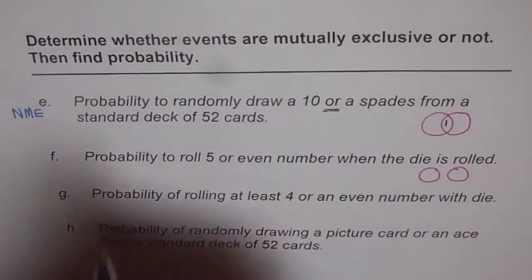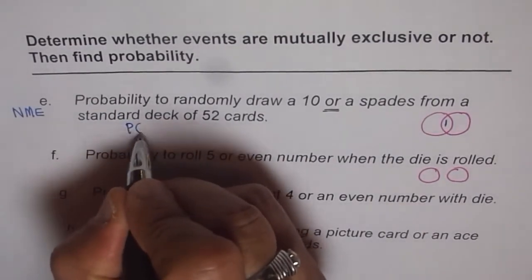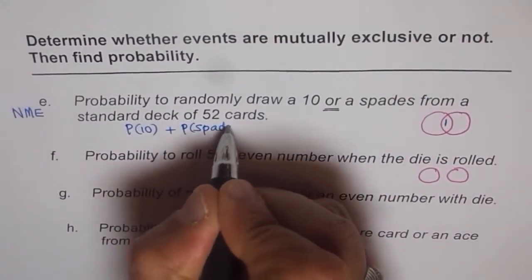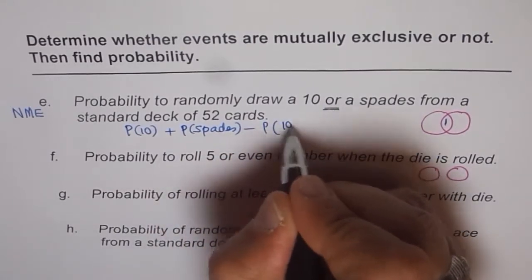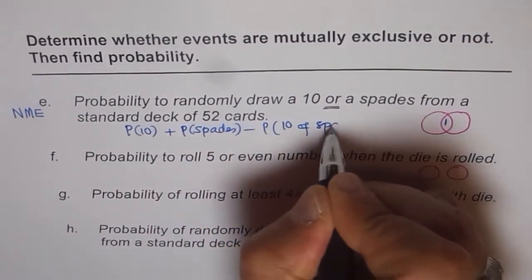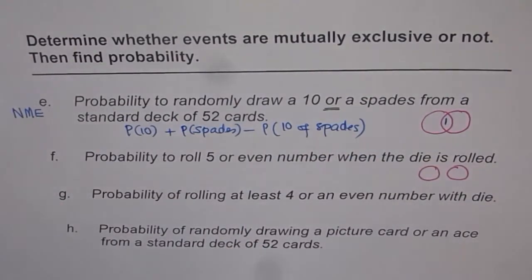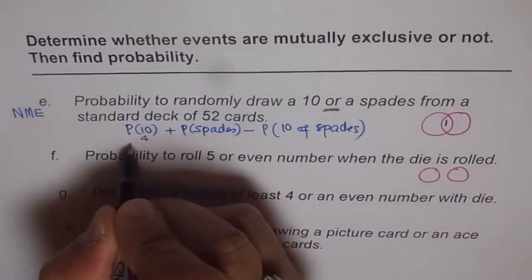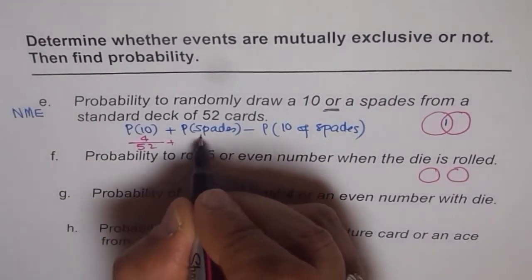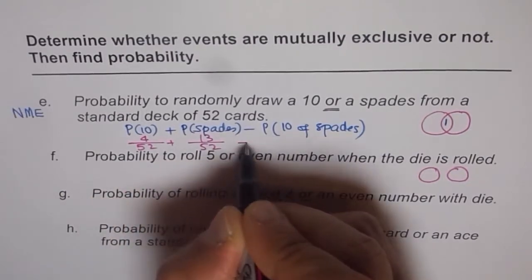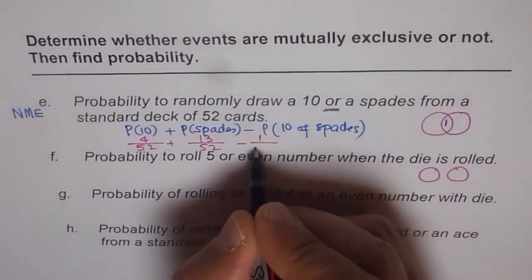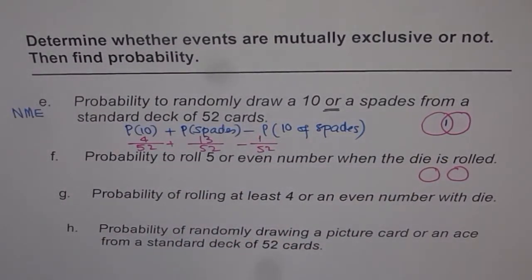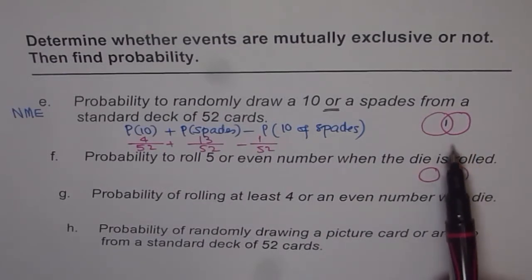Since it is not mutually exclusive, the probability of A or B equals the combination of the two minus the common cases. So: probability of drawing a 10 plus probability of drawing a spade minus probability of drawing the 10 of spades. Probability of 10 is 4 out of 52; spades has 13 cards out of 52; minus 1 out of 52 for the 10 of spades. So we take away that common element.